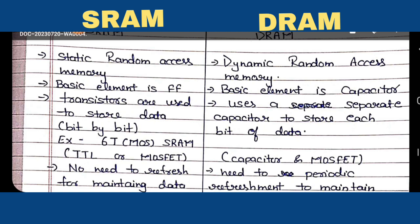In SRAM, either bipolar transistors or MOSFET transistors are used to store data bit by bit. In the case of dynamic RAM, a separate capacitor is used to store each bit of data. For example, in SRAM, 6T means 6 transistors are used for one cell, while in DRAM, one capacitor along with one MOSFET transistor is used as one cell.